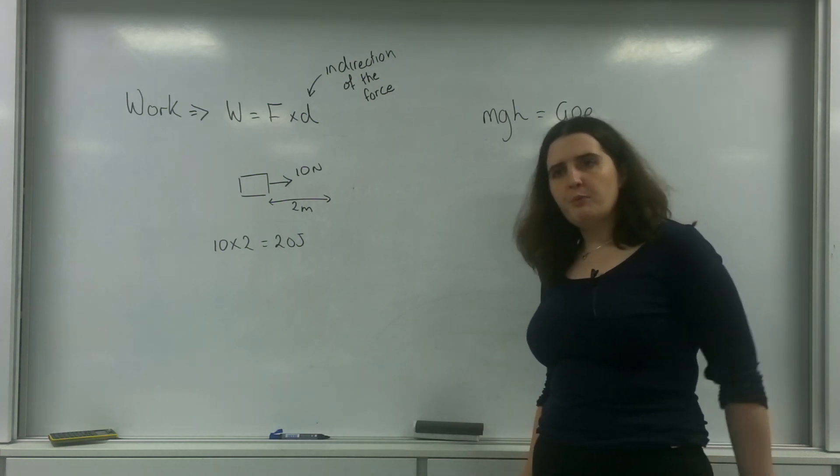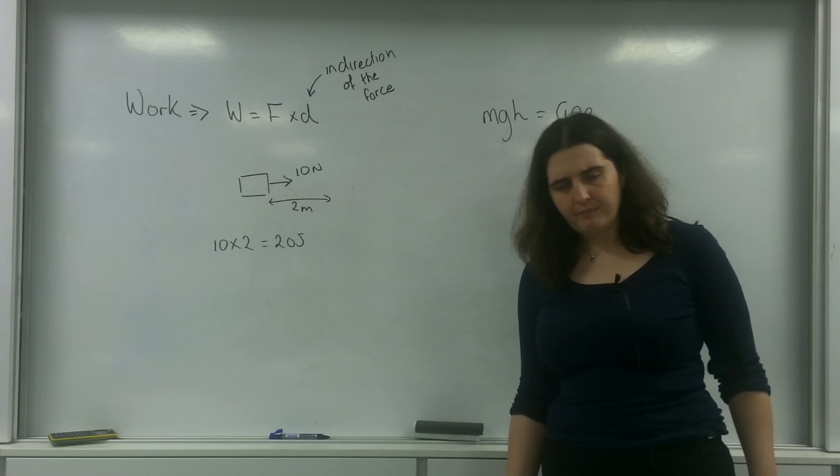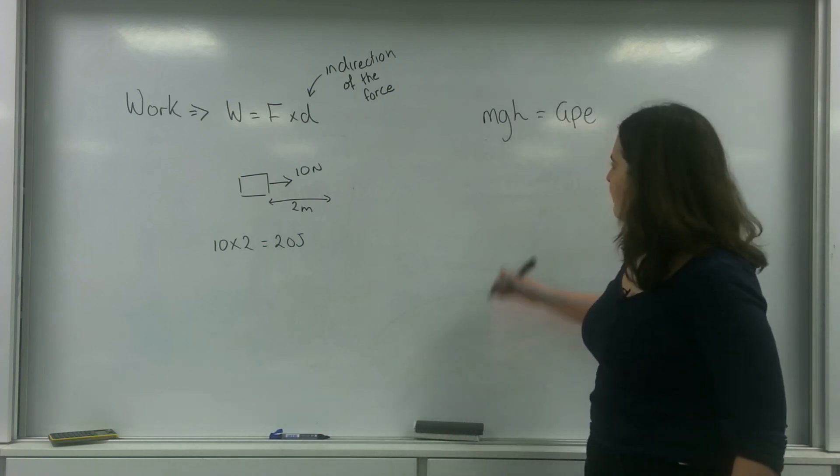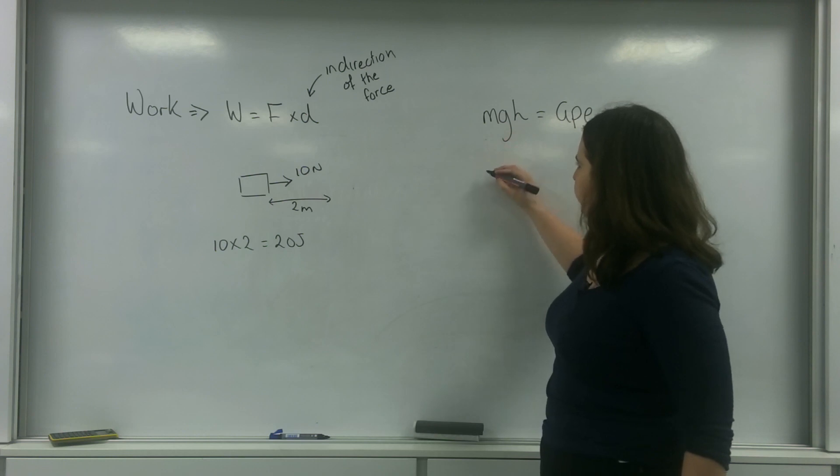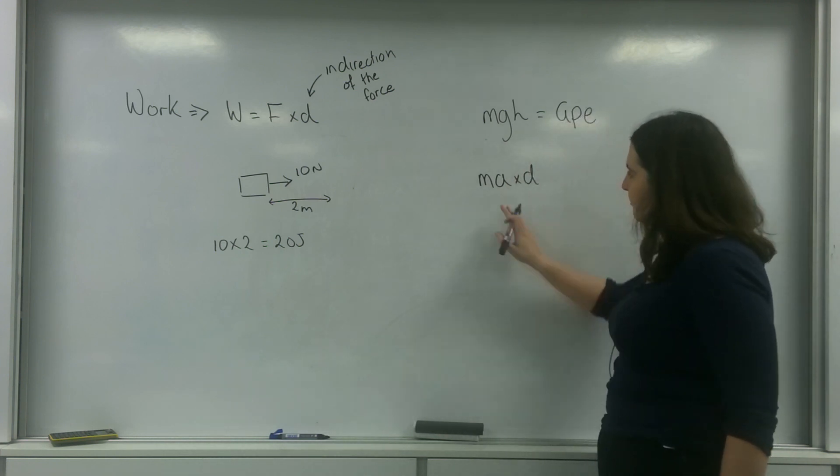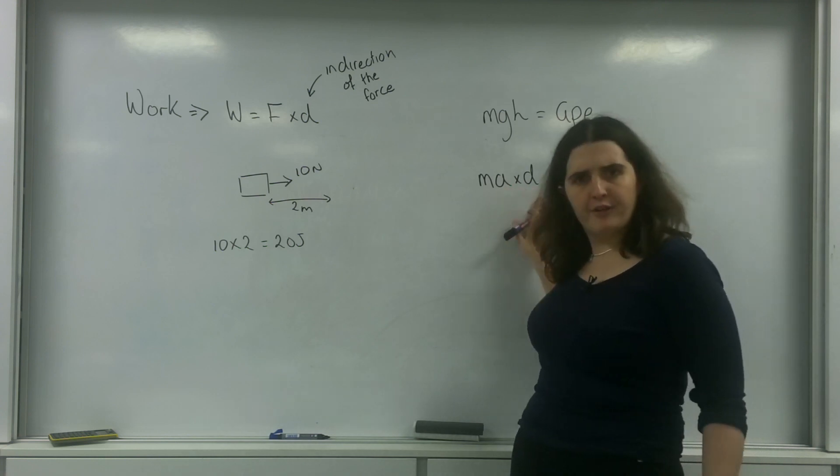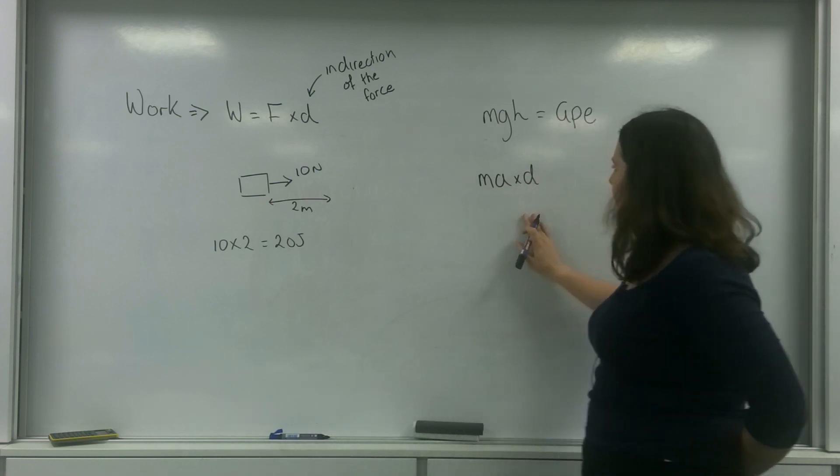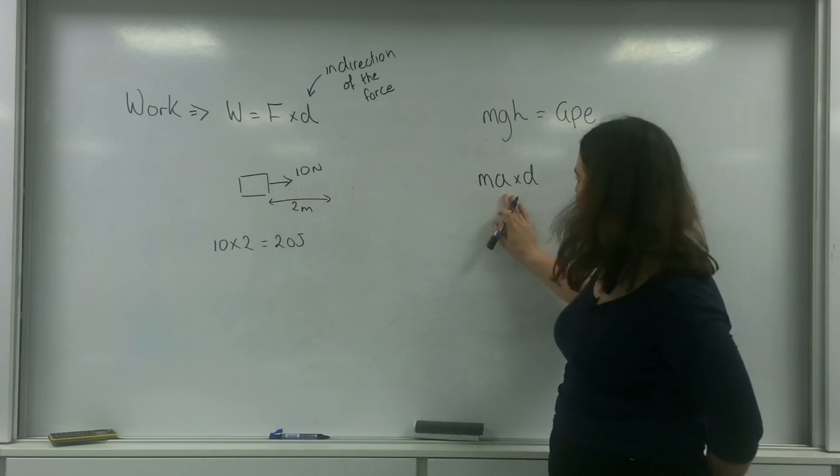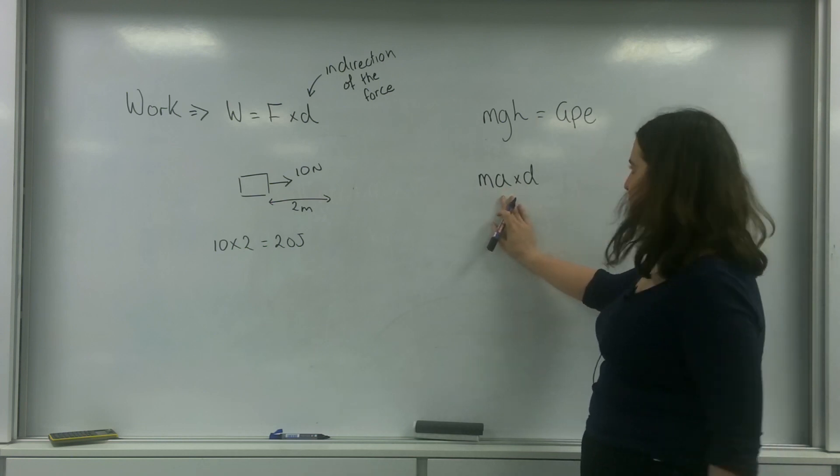I'm going to look at another one. I'm going to have an object that is accelerating. So I'm going to have an object with a force on it that is ma times by the distance. And I'm going to have here the average velocity. So I want to look at the acceleration. I want to look at the average acceleration, so I'm going to need the average velocity for that.